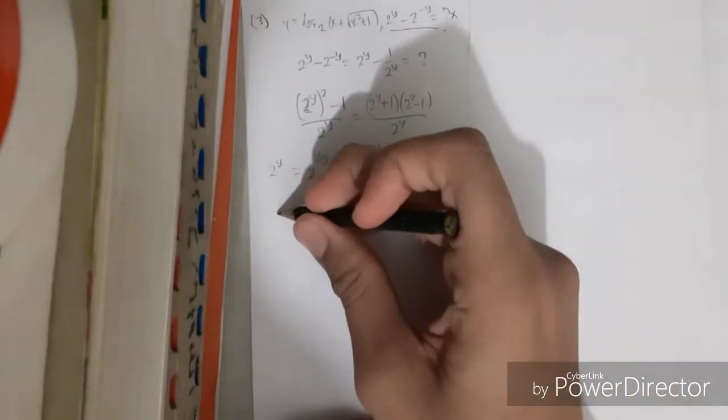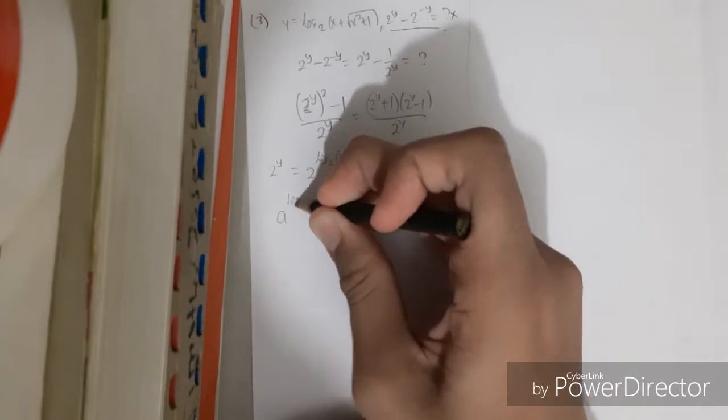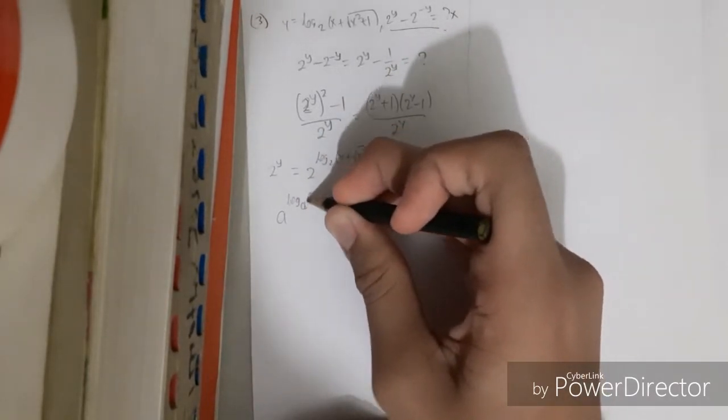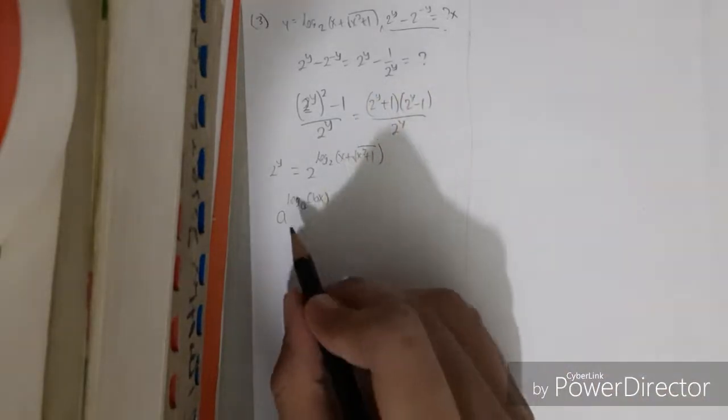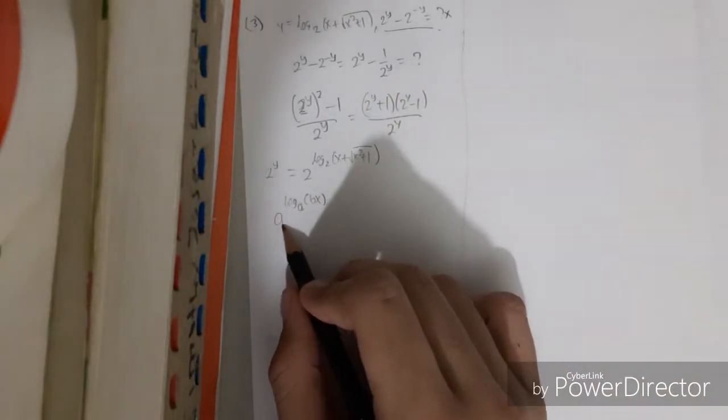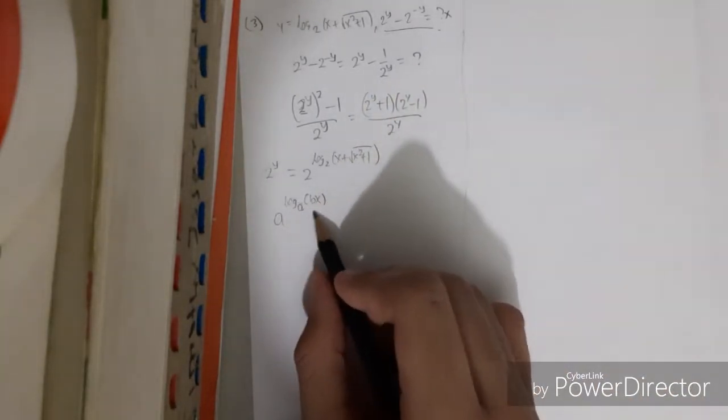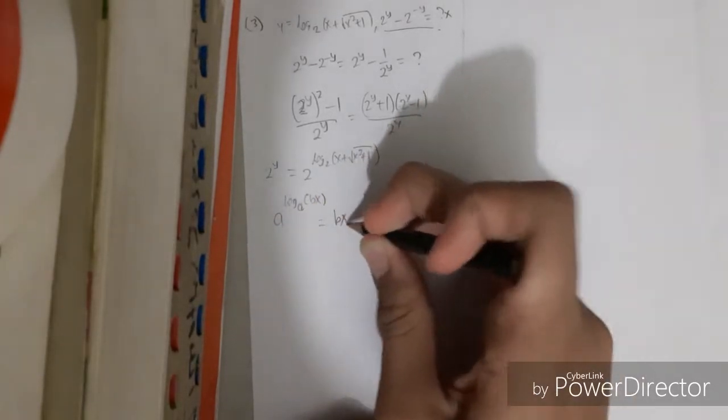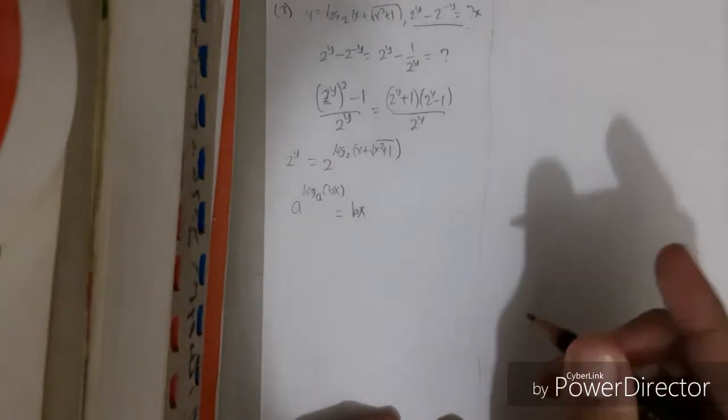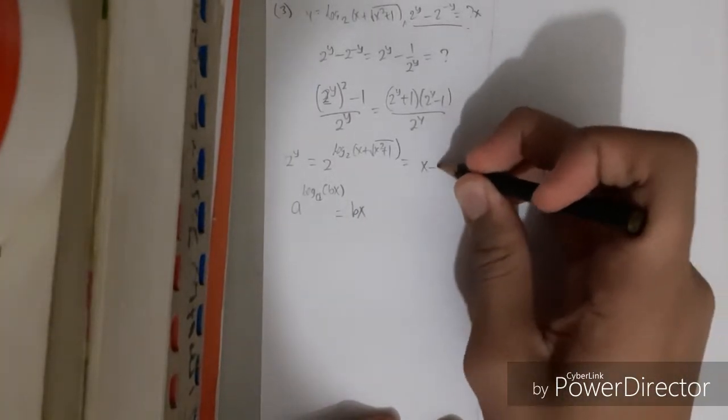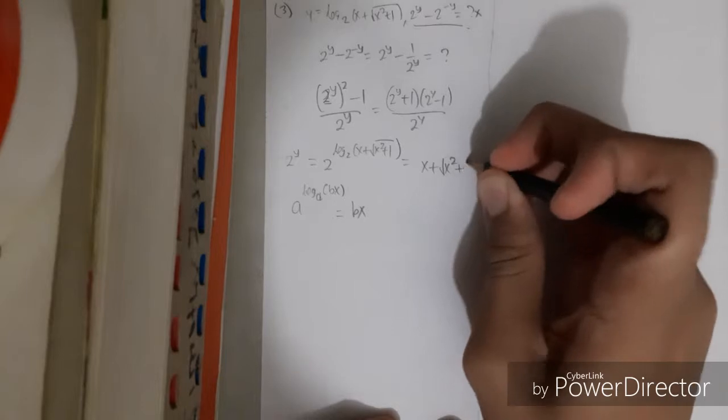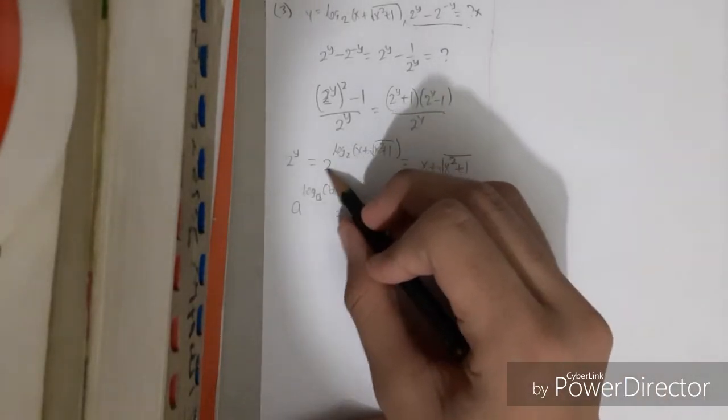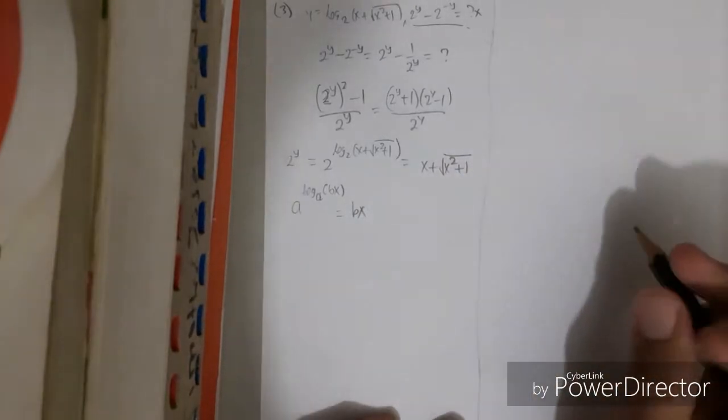a to the log base a - let's say the value is bx - if the number that powers this logarithm equals the base, then this is always equal to bx. Therefore it's equal to this, because 2 and 2 are the same number, equal to the base. This is the answer.